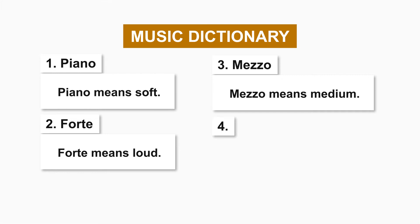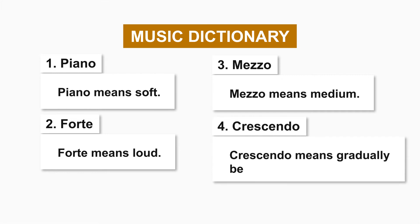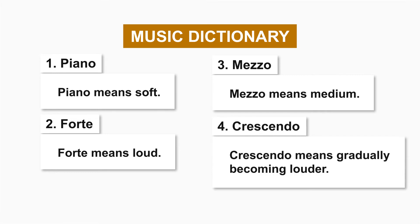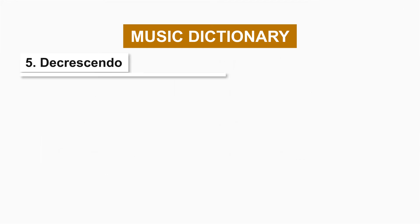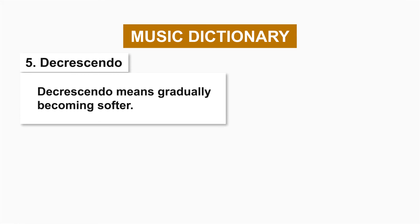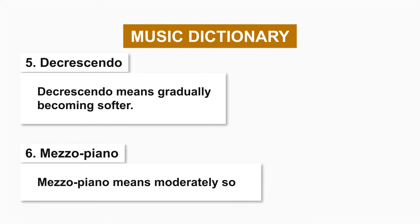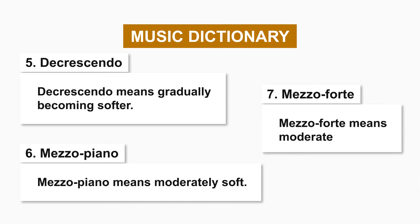Number four, crescendo. Crescendo means gradually becoming louder. Number five, decrescendo. Decrescendo means gradually becoming softer. Number six, mezzo piano. Mezzo piano means moderately soft. And number seven, mezzo forte. Mezzo forte means moderately loud.